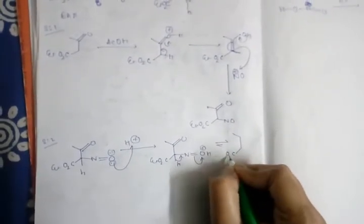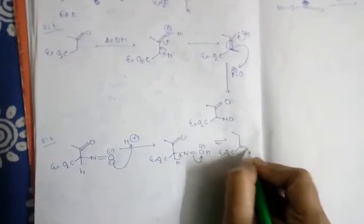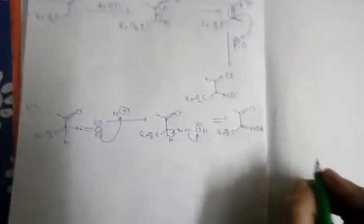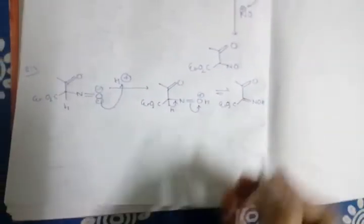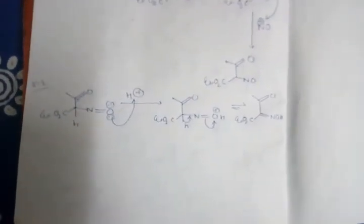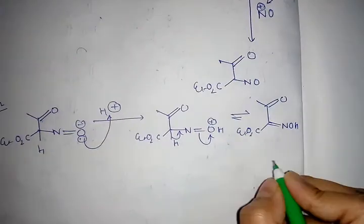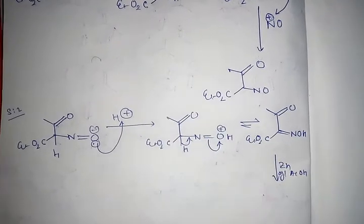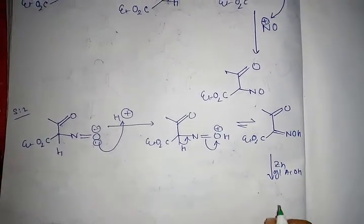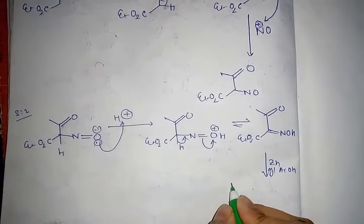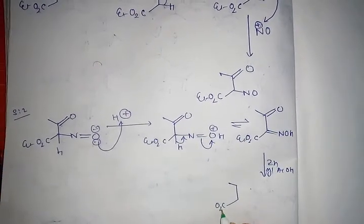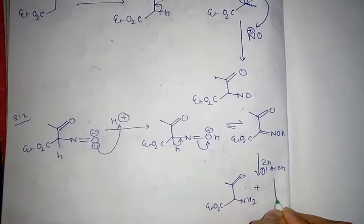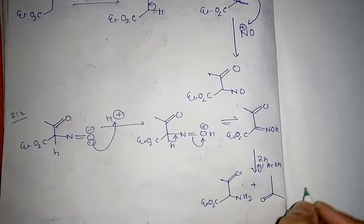Now in presence of zinc glacial acetic acid, this will reduce to NH2 CO2Et with a double bond NH2. And in the medium another ethyl acetoacetate is present. Both will react.